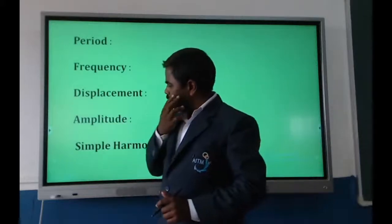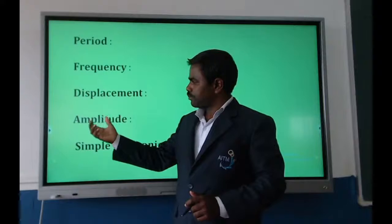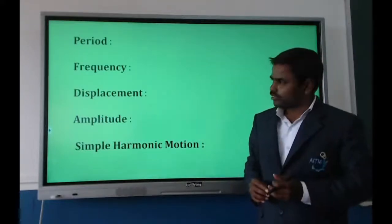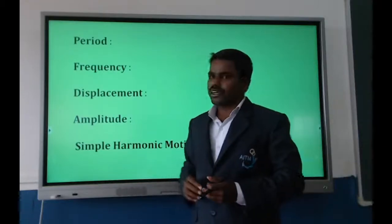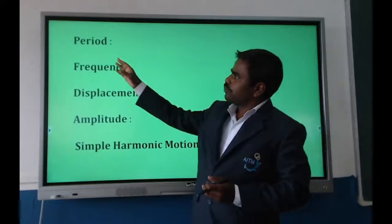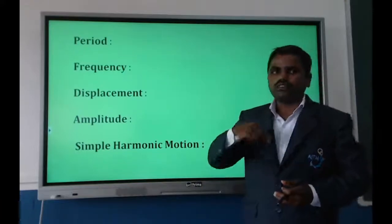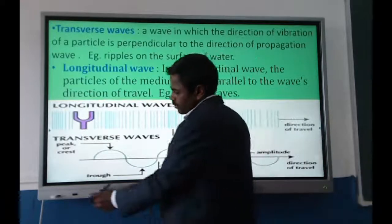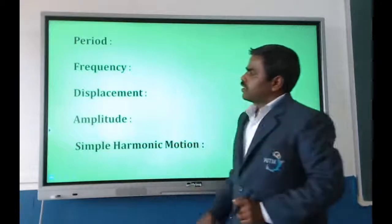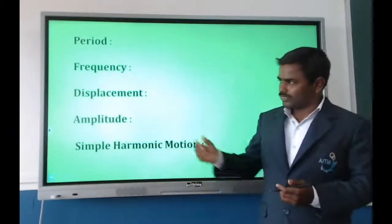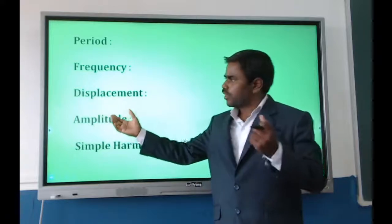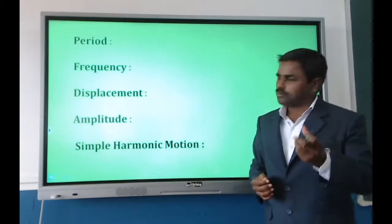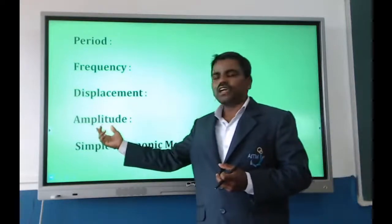Key terms in wave motion include: period — the time taken by a vibrating body to complete one oscillation, measured in seconds; frequency — the number of oscillations made in one second; displacement — the shortest distance between the initial and final position of a body; and amplitude — the maximum displacement of a particle from its equilibrium position.